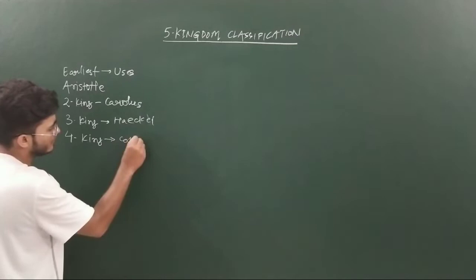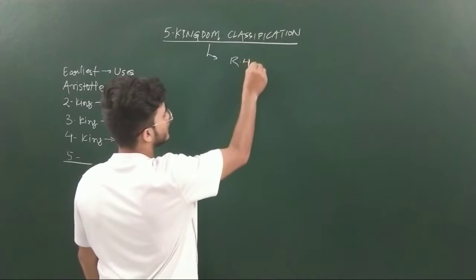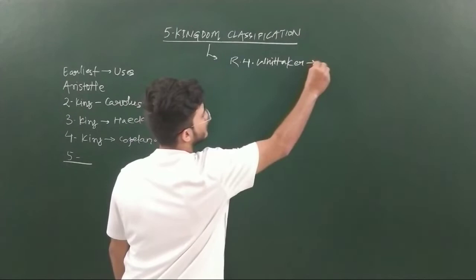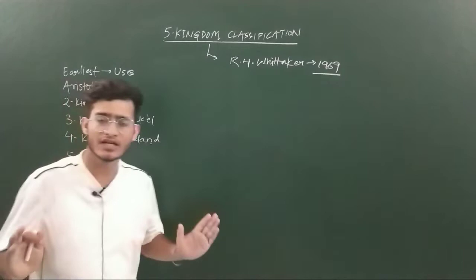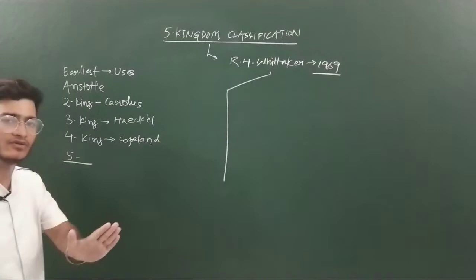Now we will be talking about the five kingdom classification. This system of classification was given by Whittaker in 1969. He divided all living organisms into five main kingdoms, and those kingdoms were divided on the basis of some major characters.